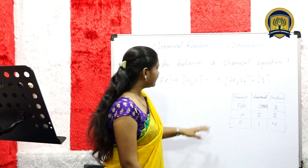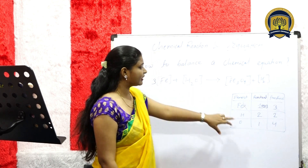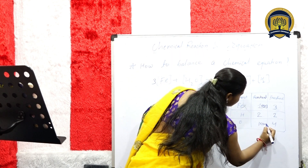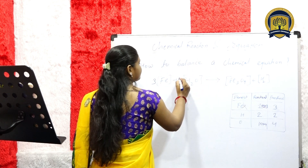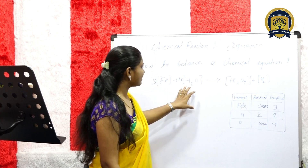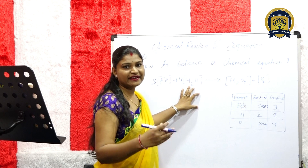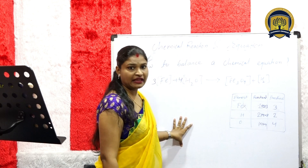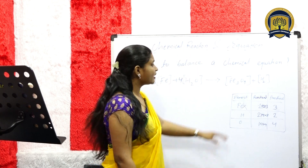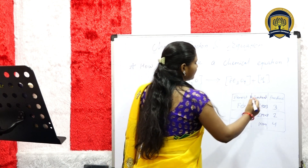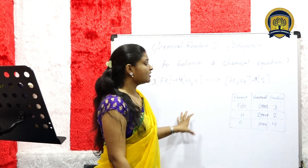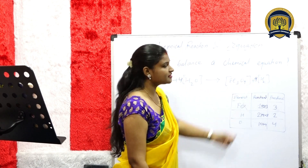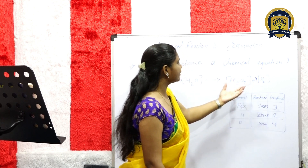Hydrogen has two atoms on the reactant side and two atoms on the product side, so we do not need to change anything there. For oxygen: one atom on the reactant side and four on the product side, so we multiply by four on the reactant side to get four as well. When we multiply by four, hydrogen's quantity also increases. We multiply four on the product side by each term, and then our equation will be balanced.